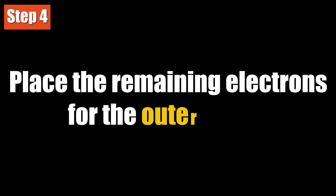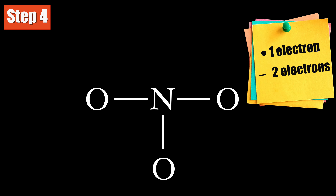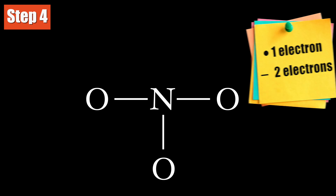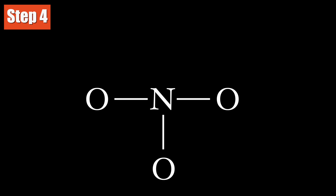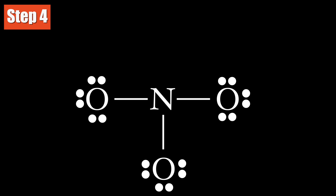Step 4: Place the remaining valence electrons for the outer atoms so that their octet is complete. Remember, each dot represents an electron and each line represents 2 electrons. So far, we have used 6 valence electrons to make the skeletal structure. Use the remaining 18 electrons to complete the octets on the oxygen atoms.